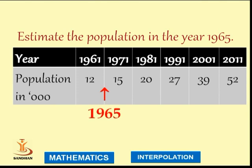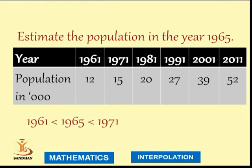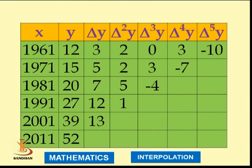Why forward difference? Because 1965 lies in the upper half, between 1961 and 1971. We use forward difference, and the value of k, because 1965 lies between x₁ and x₂, is k = 1. We construct the forward difference table as follows.